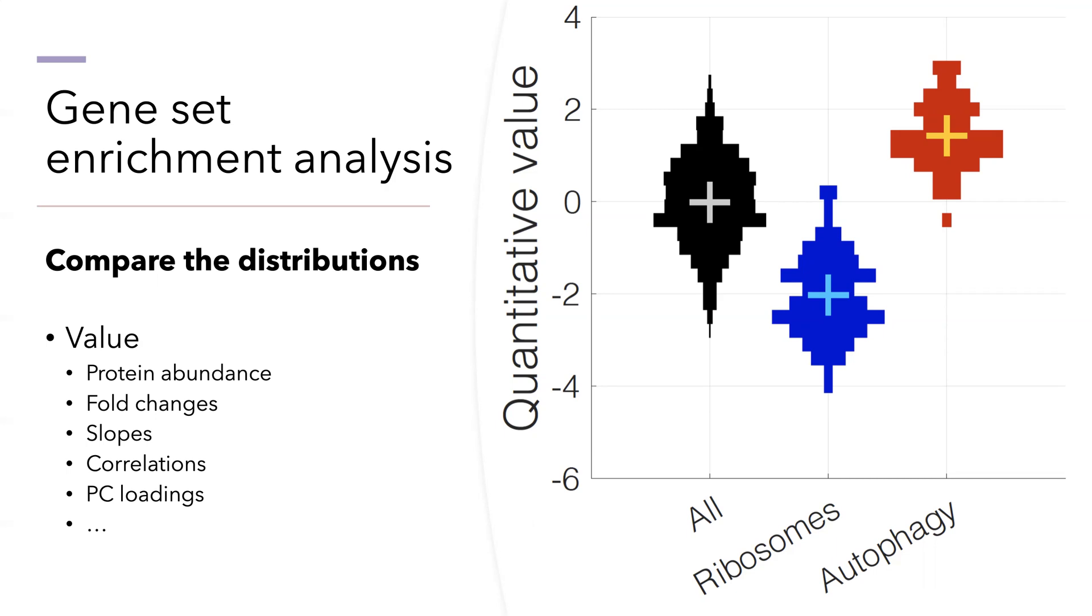Then we can simply compare those distributions using any test that we want that is suitable to the particular problem of interest. I have intentionally used here the vague term 'value' because I want to emphasize that value can be anything. It doesn't have to be just protein abundance or fold change. It can be a slope from a regression computed across time series or computed in a dose-response curve. It can be correlations of the proteins to a functional phenotype, to fitness effects. It might be the loadings of a principal component or any other numerical metric of interest that comes out from your analysis, and can be used within this very flexible framework to estimate whether that metric shows a systematic and significant difference across different sets of functionally related proteins.